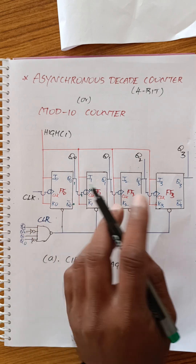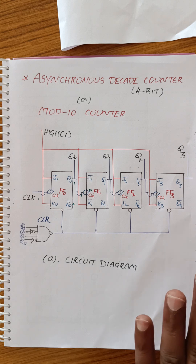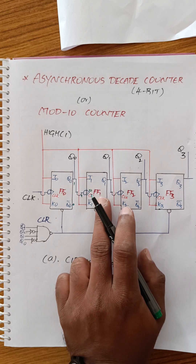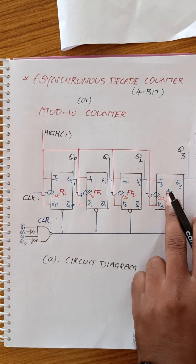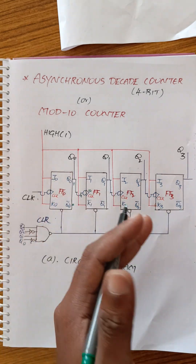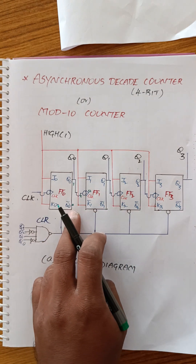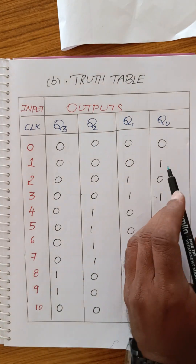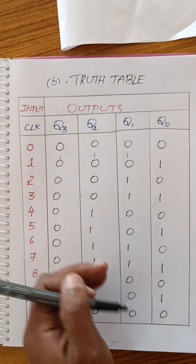The second flip-flop receives a 0-to-1 transition from Q0 — but since this is a negative-edge-triggered system, when the signal is at 0 (off condition), the second, third, and fourth flip-flops all remain off. Even though input data is applied, they maintain their previous data. Only the first flip-flop toggles from 0 to 1; the remaining three maintain their previous state.